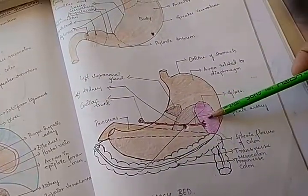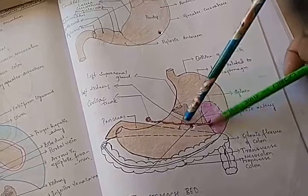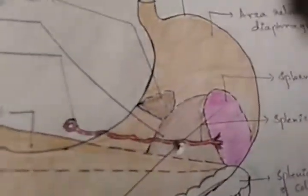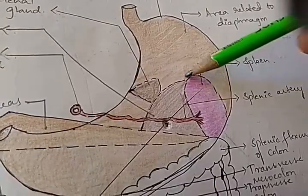This is the spleen. This thing what they have shown here is the spleen. See, why they show dotted lines, you know? Because it is behind the stomach. The spleen.